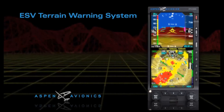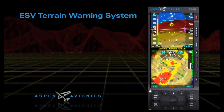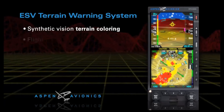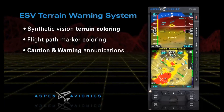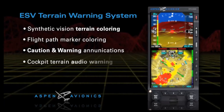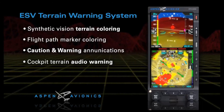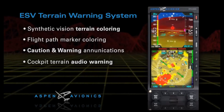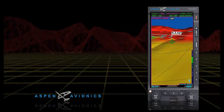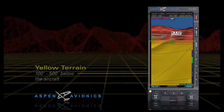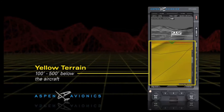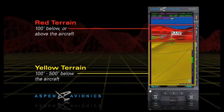SV2 presents the standard nav display while SV3 presents the nav display overlaying the high resolution topo map. Aspen's ESV also has a built-in terrain warning system combining the use of synthetic vision terrain coloring, flight path marker coloring, caution and warning text enunciations, and a cockpit terrain audio warning signal. The terrain warning system alerts the pilot when terrain or obstacle conflict is imminent. The red and yellow terrain coloring represents the relative terrain elevation with reference to the aircraft's altitude. Terrain that is between 100 and 500 feet below the aircraft is shown as yellow, while terrain less than 100 feet below or above the aircraft is shown as red.